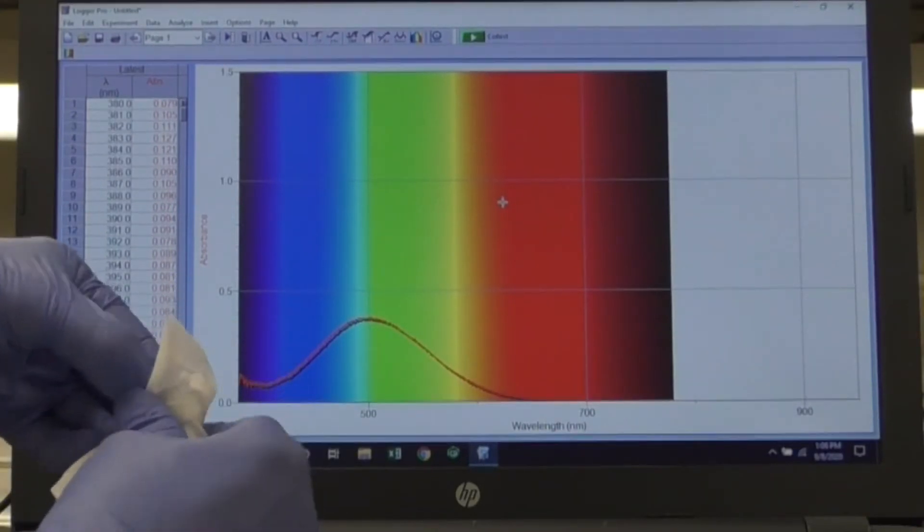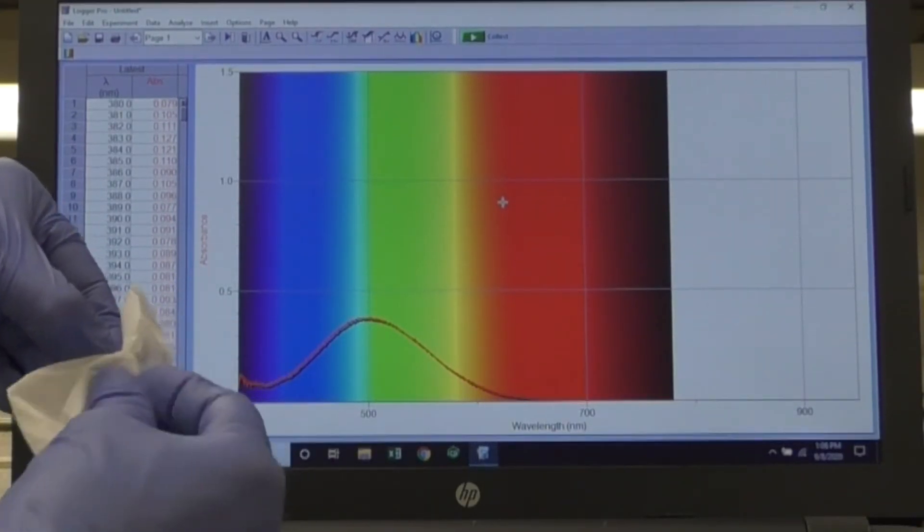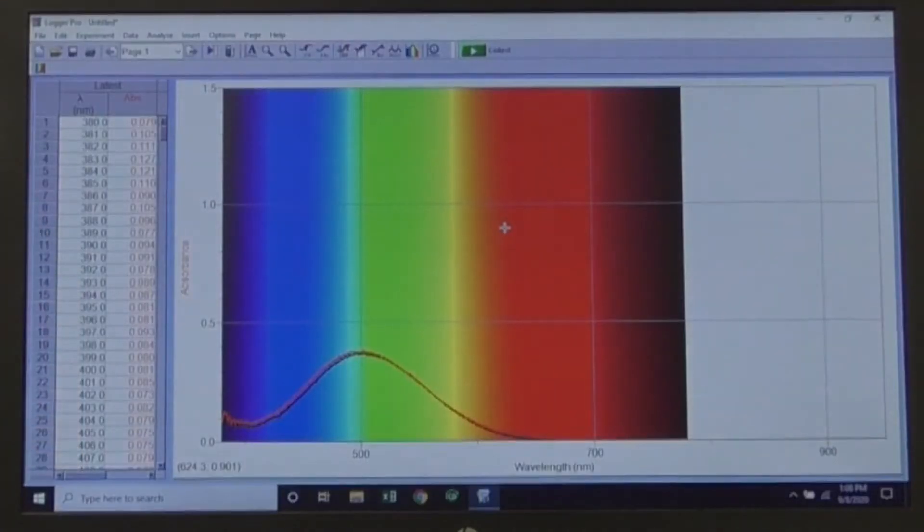Repeat this procedure with your patient sample when it is ready, being sure to click Save Latest Run. Use the examine tool to read your results at 500 nm.